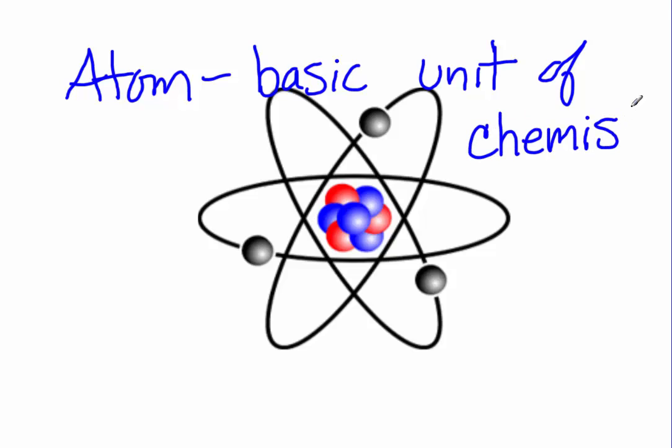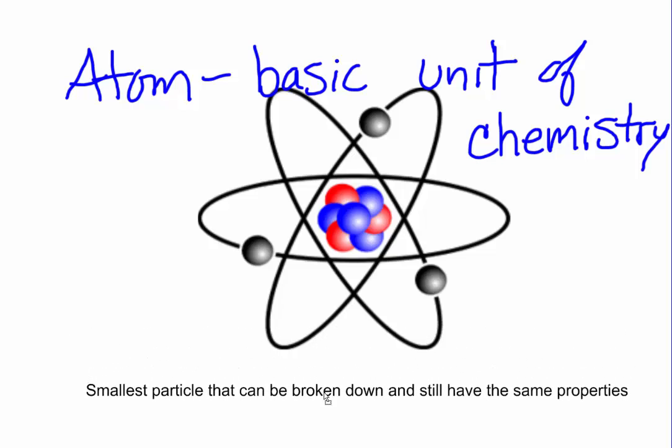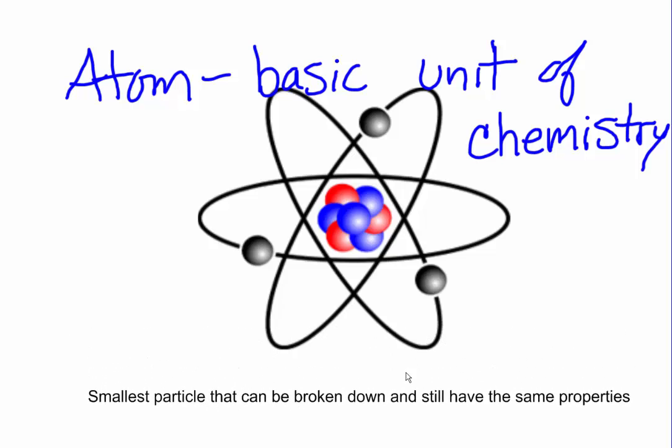If you can imagine, if we took an iron bar and we cut that in half, and then we cut that piece in half, and we cut that piece in half, and we kept doing that, would there ever get to be a point where we couldn't cut it in half anymore? That would be an atom. An atom is the smallest particle that can be broken down to and still have the same properties and still be iron.